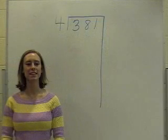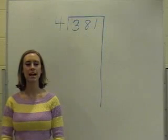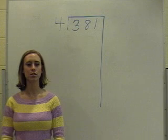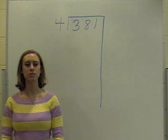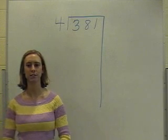In the partial quotients method, it takes several steps to find the quotient. At each step, you find a partial answer. The partial answers are then added to find the quotient.